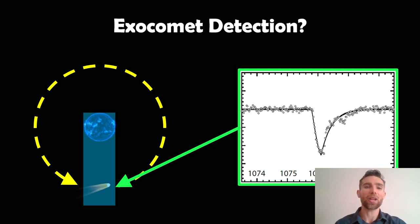Now you're probably more familiar with exoplanets and how they're detected with the transit method, but you can detect exocomets using the same method. They look slightly different though.